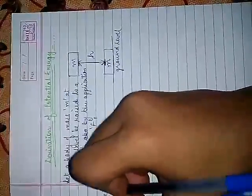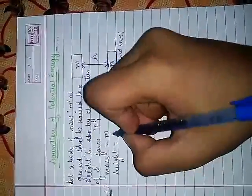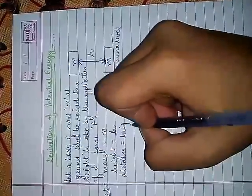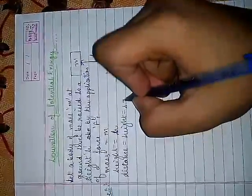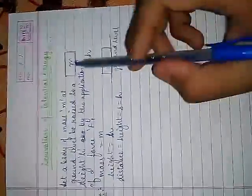So again we would be listing the variables. So write 'let' and then write the variables. Mass equals m. Height equals h. Distance equals height equals s equals h. They are all equal distance. This is the distance traveled in this case.